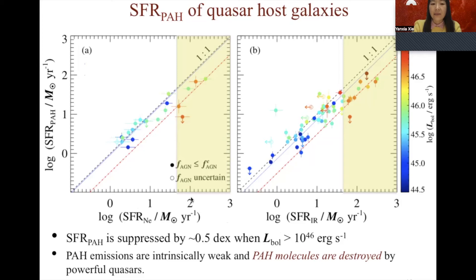We find PAH underestimates the star formation rate by about 0.5 dex when the star formation rate is higher than 50 solar masses per year. Since star formation rate also correlates with quasar luminosity, these objects correspond to quasars with bolometric luminosity higher than 10^46 ergs per second. From our previous work, we already know that these bright quasars also have equivalent gas reservoirs compared to normal star-forming galaxies. Therefore, we conclude that the PAH emissions in these objects are intrinsically weak and the PAH molecules tend to be destroyed by the powerful quasar activity.